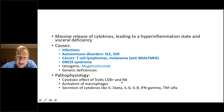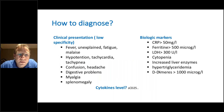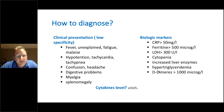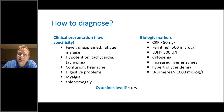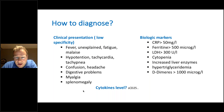How do we diagnose the cytokine storm? The clinical presentation is very low in specificity. Patients present with fever, unexplained fatigue, malaise, hypotension, tachycardia, tachypnea, confusion, headache, digestive problems, myalgia, and splenomegaly. For these patients we should go for biological markers: CRP is high, ferritin level is high, LDH is high, cytopenia, increased liver enzymes, hypertriglyceridemia, and elevated D-dimers. Of course, cytokine level measurements can be done but are not available in regular labs.